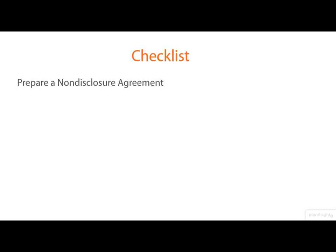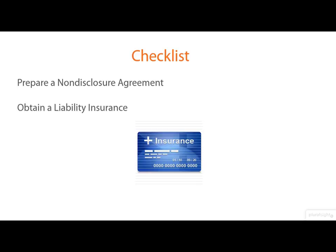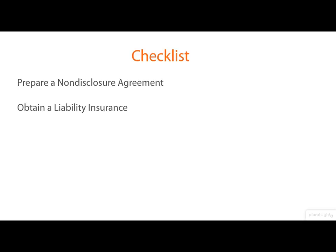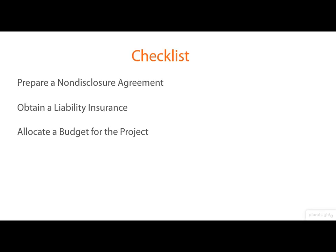A typical NDA, once reviewed by a lawyer, specifies all the information that you are not allowed to disclose to other parties. The team should get liability insurance from a local insurance company in order to protect the team's interest if the client files a lawsuit caused by a damage during the course of a penetration test. After that, the team must prepare a budget for the entire process of penetration testing. The main purpose of this budget is to estimate the overall expenses required for the project.